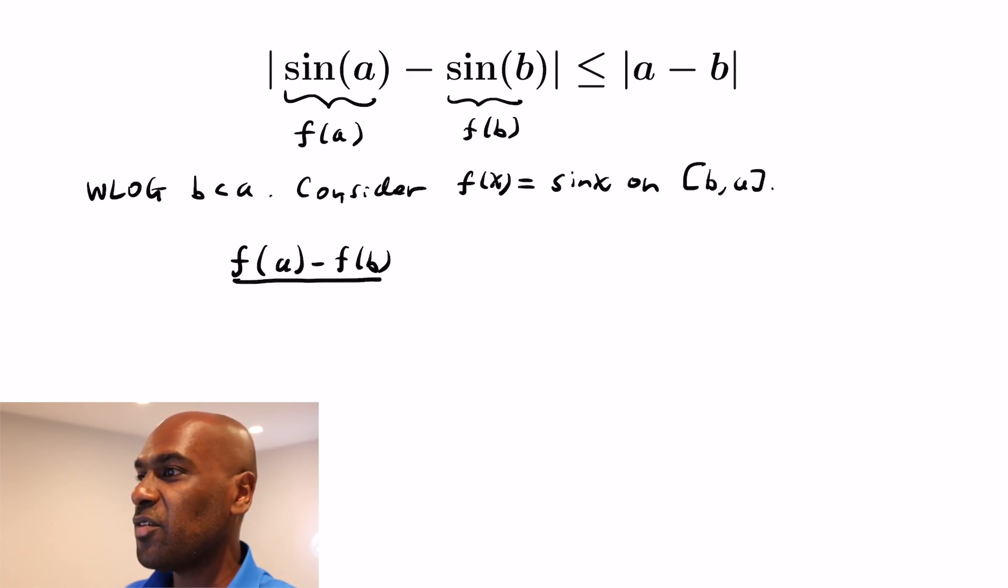So if we look at the difference f(a) - f(b) which is actually what's on the left hand side, when we divide that by a - b we're going to get the derivative of f at some point c in the open interval from b to a. Now f'(c) is actually cos(c) and that value is between -1 and 1 because that's the range of cosine.